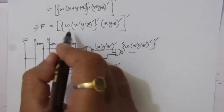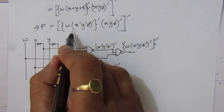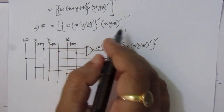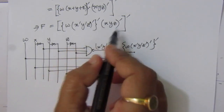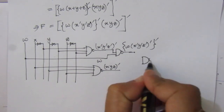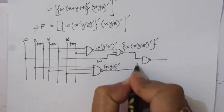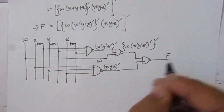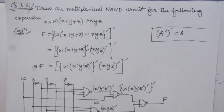Now we have two terms: suppose this is A and this is B, giving us A · B whole bar. This term is A, this term is B, so A · B whole bar. We use a final NAND gate here, and we get the function F at the output. This is the solution of problem number 3.21.